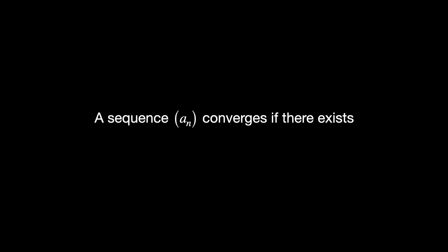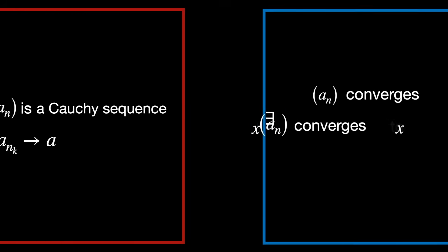A sequence a sub n converges if there exists some number x such that a sub n tends to x. Now, our table becomes this.